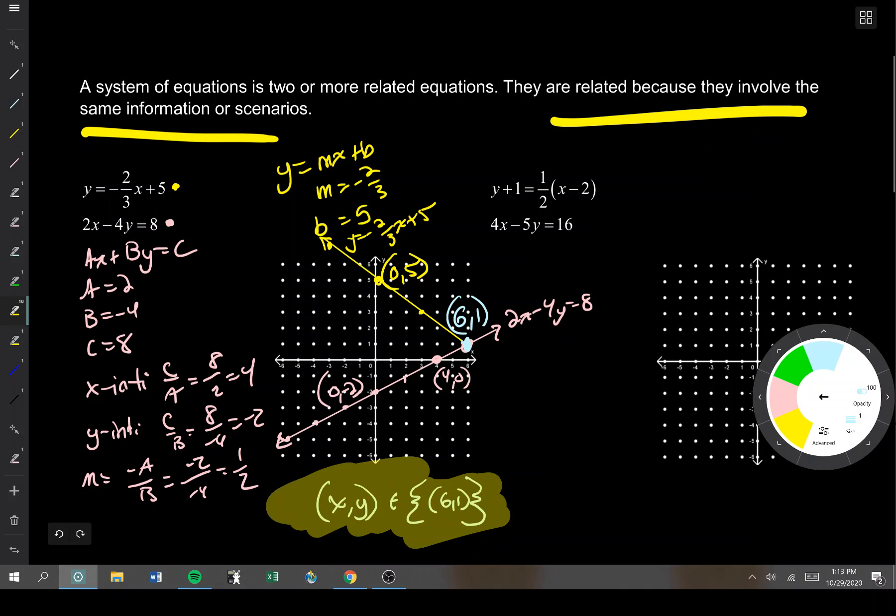Now notice a few things that I did. When I graphed the lines, I labeled some points on each line. I clearly labeled the point of intersection. I labeled the line itself. I used a straight edge. I had a graph with labels on the scales. All those things matter. All those things are important. I'm going to grab this and pull it out of the way over here.